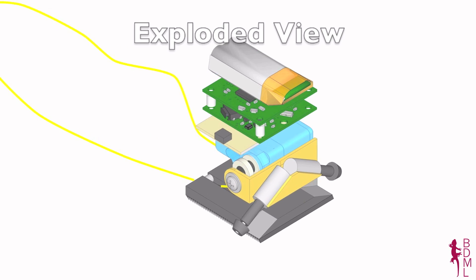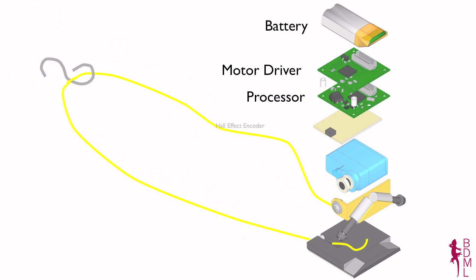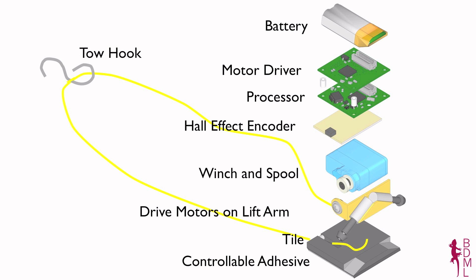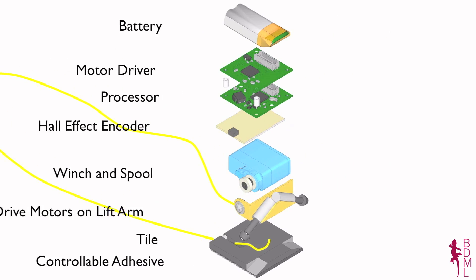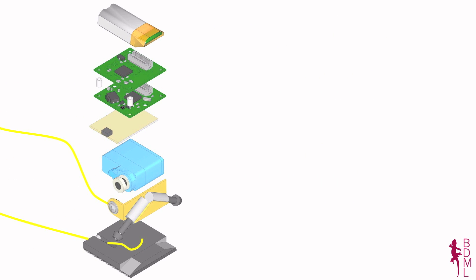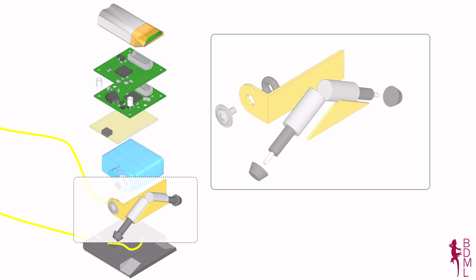Here we look at how the robot is made. It has a controllable adhesive base with a large winch, tow cable, and hook, along with a microprocessor and electronics. The winch is used to both pull the large loads and raise and lower the drive wheels, controlling contact with adhesive on the ground.